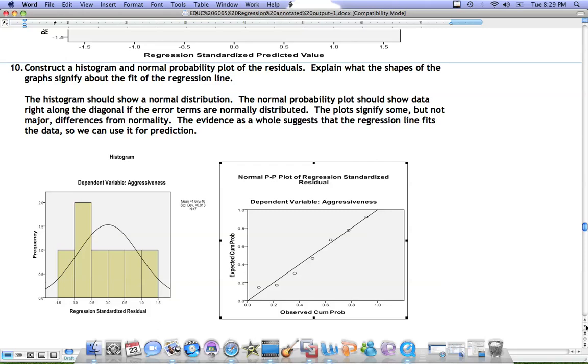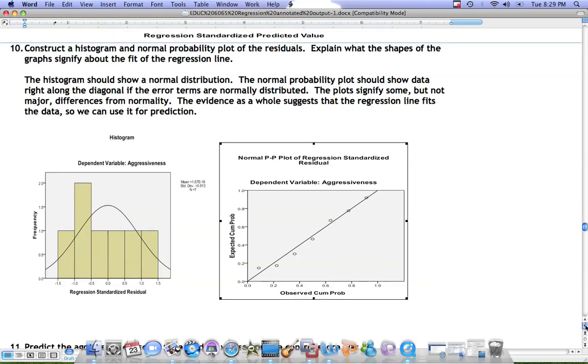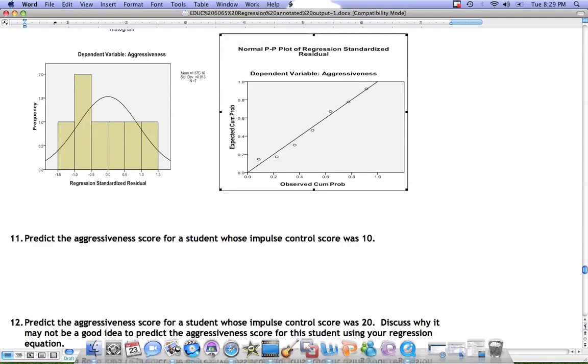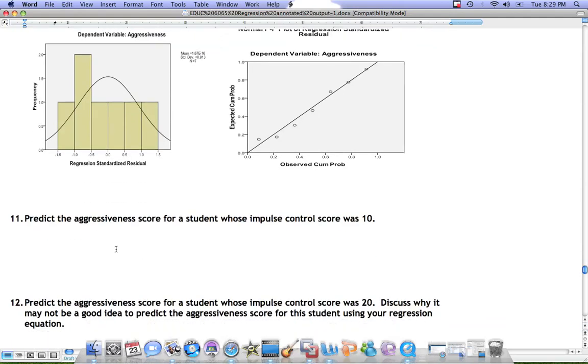Therefore, we can use the model to predict aggressiveness from the impulse control scores. As an example, if we want to predict the aggressiveness score for a student whose impulse control score is 10,